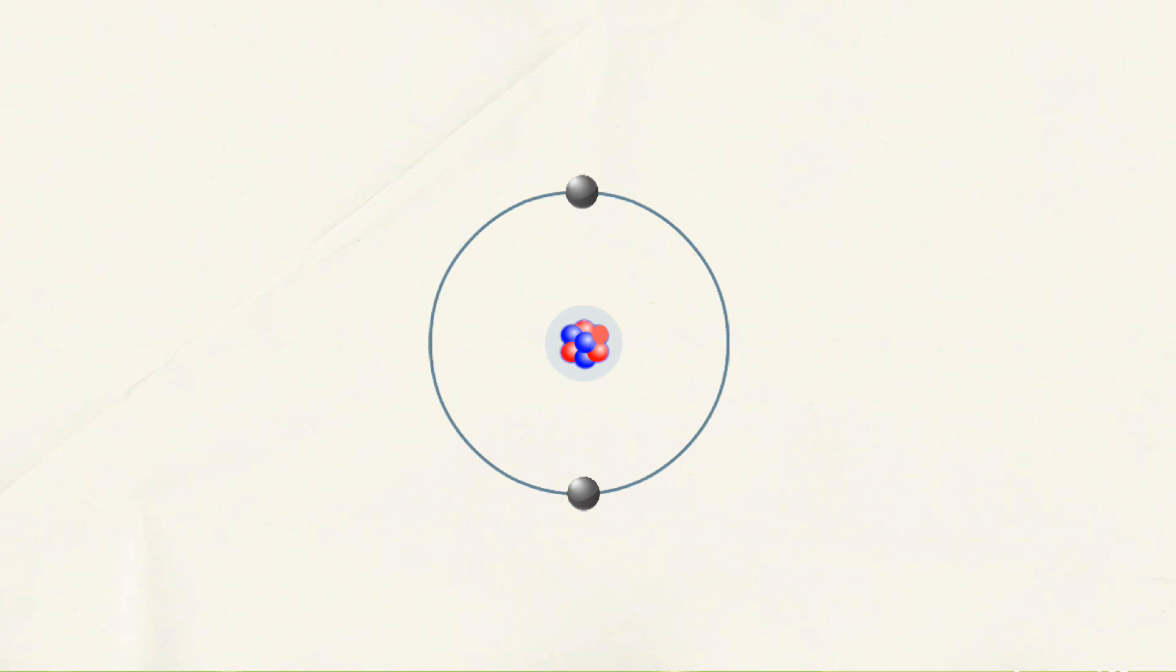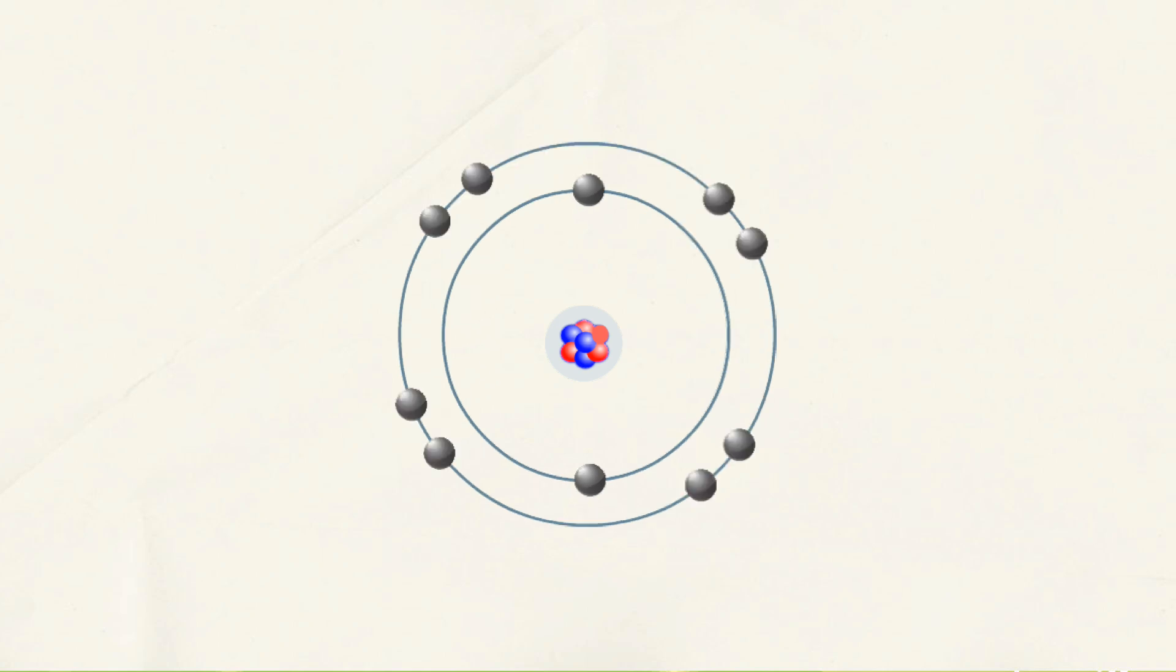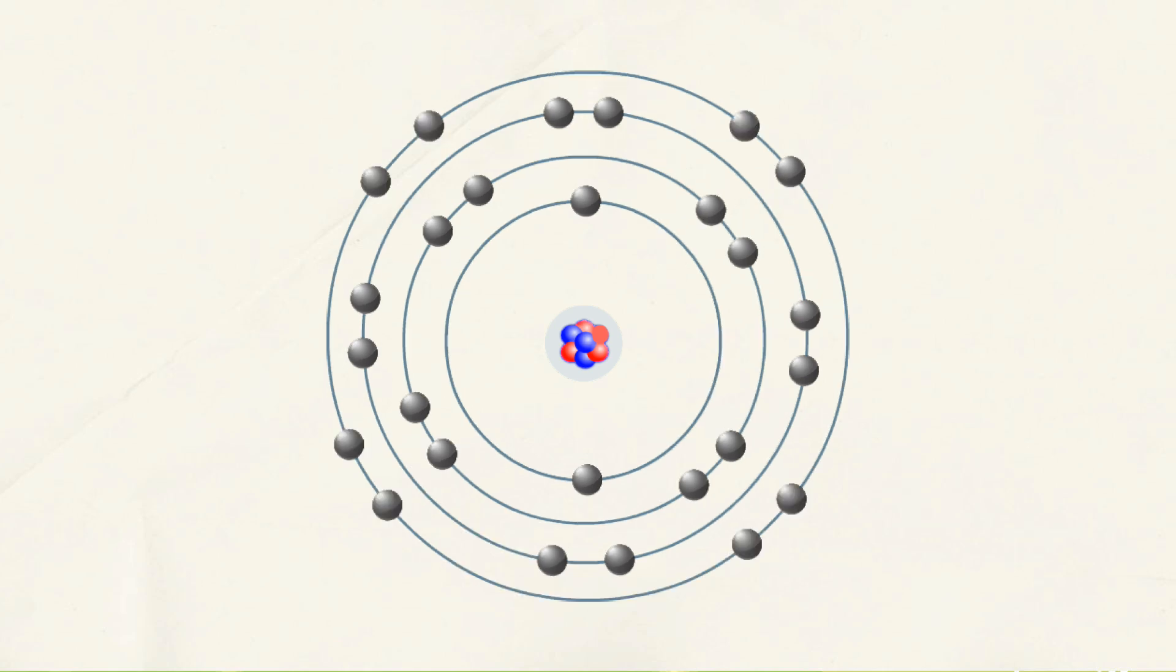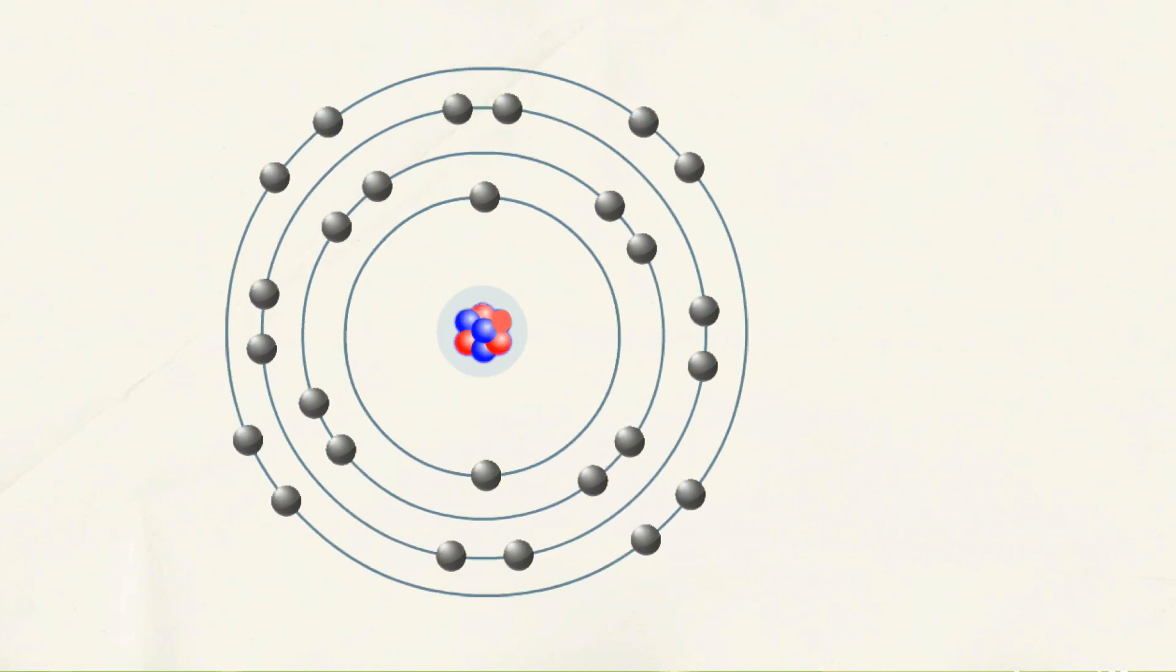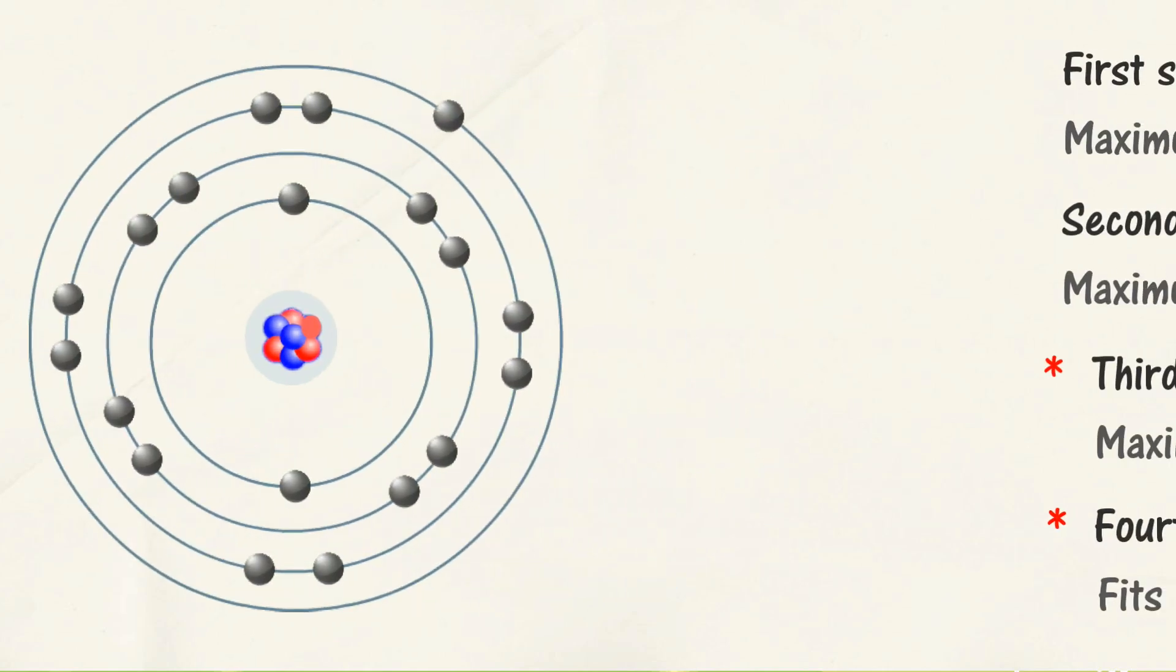For shell 1, the maximum number of electrons is 2. For the next shells, 2, 3, and 4, the maximum number of electrons are 8. However, this is only true for the first 20 elements.